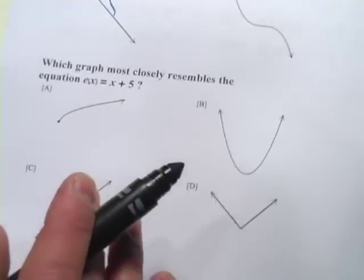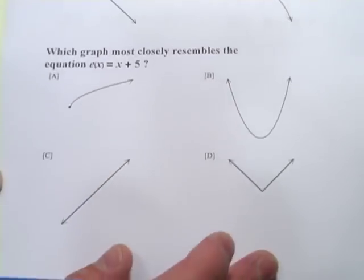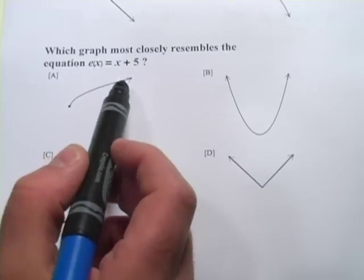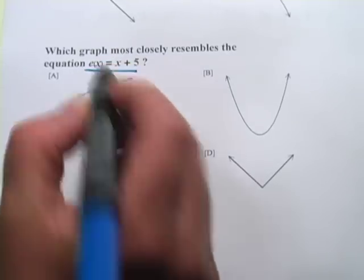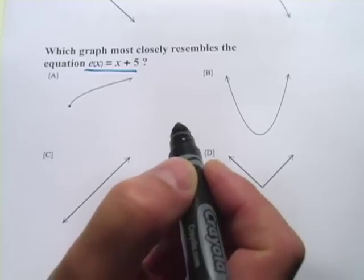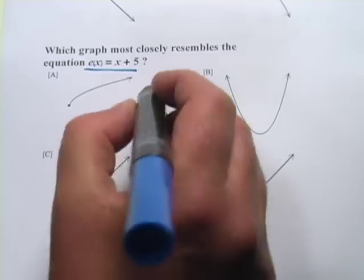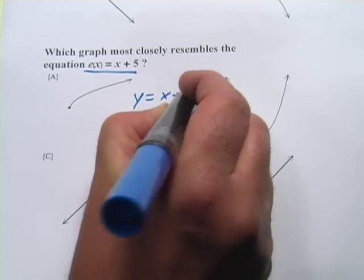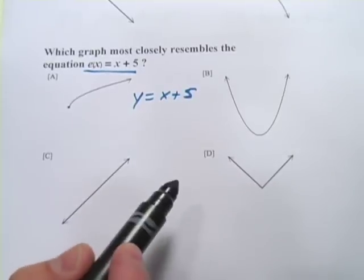All right, let's check this next one. It says which graph most closely resembles the equation e(x) equals x plus 5. Now, don't let the e(x) part confuse you. That's the same as f(x). It's just another name for a function, and you can substitute y in there if that makes you feel more comfortable. You could say y equals x plus 5, and that, you should recognize,